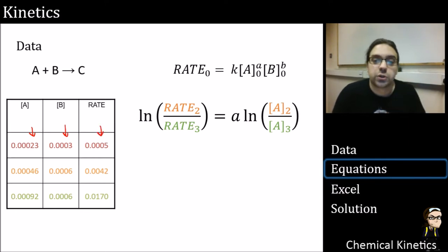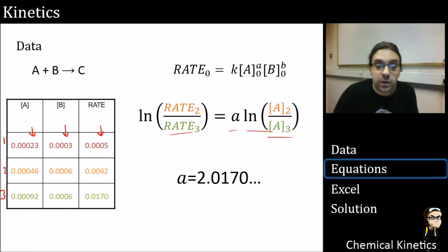So here's our data for just the values, not the log version, so I'm going to do it this way. Rate 2 over rate 3 equals a log a2 over a3. So the values from say 1, 2, and 3 need to go into the right place. And when you crunch those down, you end up with a value of 2.0170. So that roughly rounds off to about 2. So our value of a up here is 2. It's second order with respect to a. That was sort of in line with the initial guesstimate as well. So we're doing quite well.